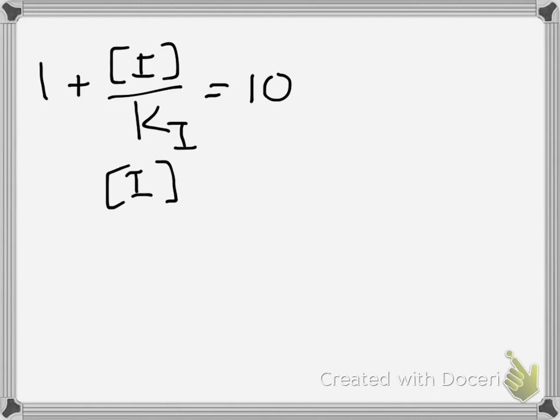So when you cross multiply, you end up with 1 plus I over Ki equals 10. You subtract 1 from the right side of the equation, so you end up with I over Ki equals 9. Then I equals 9 Ki.